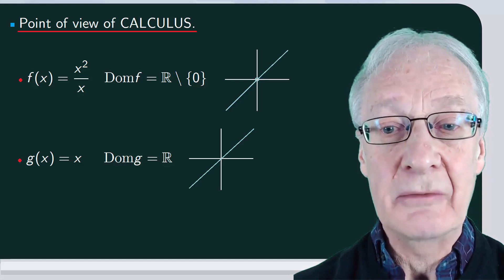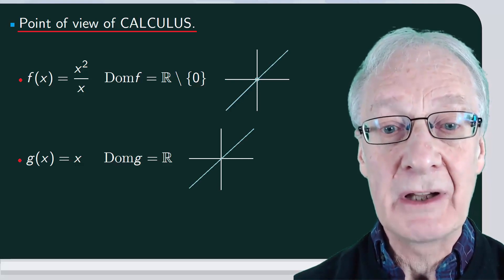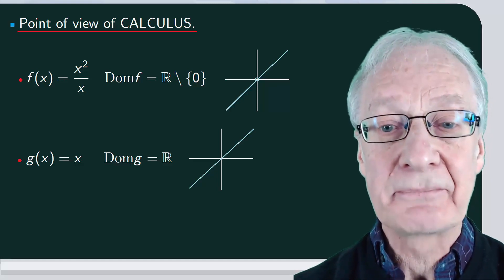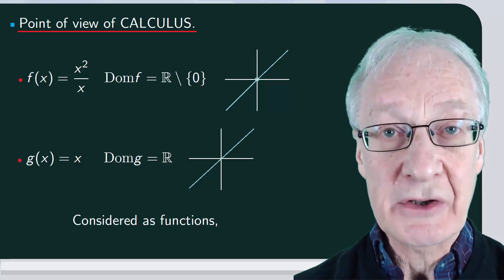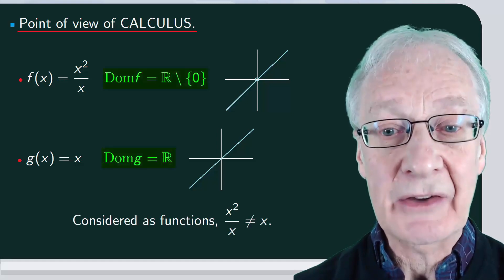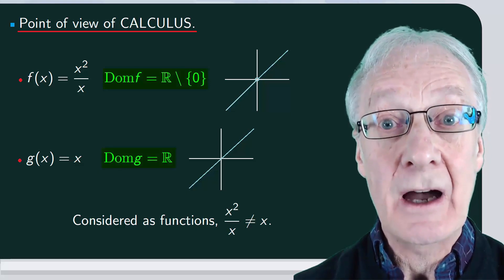Here are the graphs of both. They're very similar, but they're not the same. So, considered as functions, x squared over x and x are different.